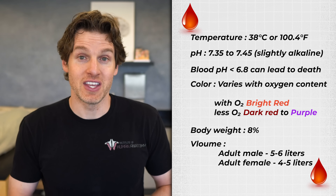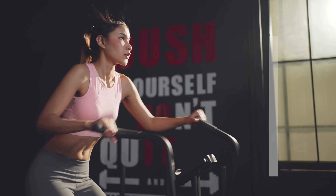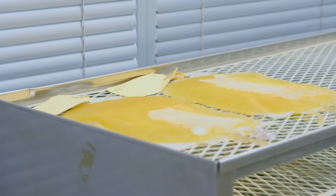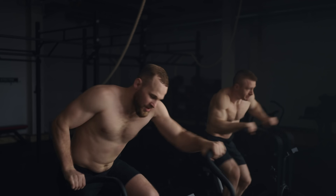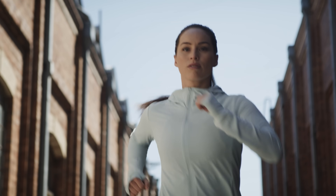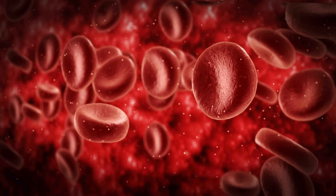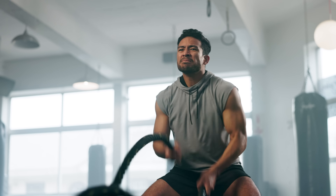Blood makes up about 8% of total body weight, with volumes of about 5.6 liters in adult males and 4.5 liters in adult females. With consistent cardiovascular exercise, your blood volume will increase — initially this is an increase in the plasma, the fluid component of the blood, which can occur within a couple of days of moderate to intense cardiovascular exercise. Then over the next few weeks, the body will also start to produce more red blood cells, and both of those changes — more plasma and more red blood cells — will improve fitness and athletic performance.